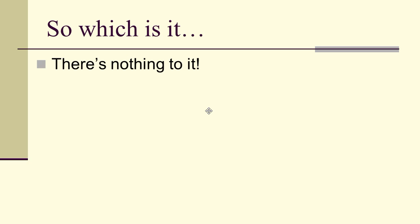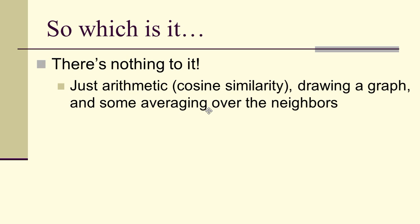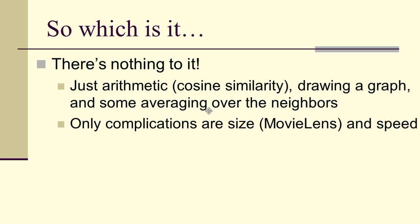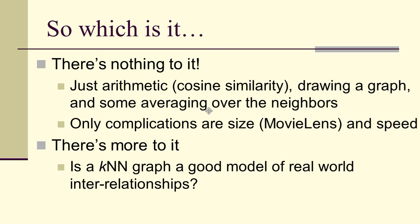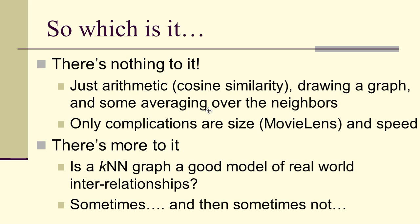You might ask: is that all there is to it? And the answer is yes — it's just arithmetic: cosine similarity, drawing a graph, some averaging over neighbors. The only complications with the MovieLens data are size and speed. But there is more to it. What makes it interesting isn't the computing or the programming — it's asking: is the k-nearest-neighbor graph a good model of real-world interrelationships? Sometimes it is, and sometimes it's not. That is the complication. The algorithm itself is near trivial.